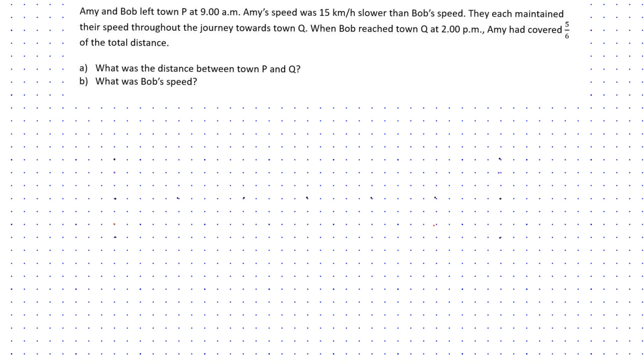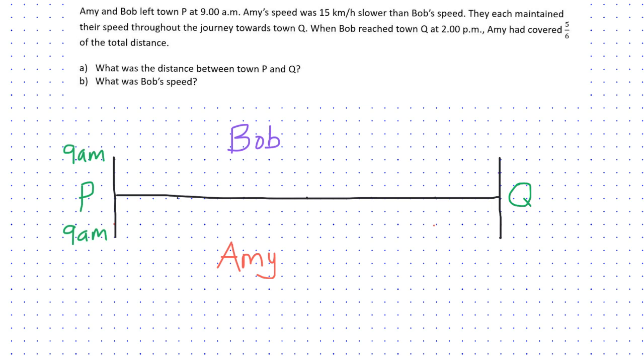So first, I'm going to draw a diagram which will help us to answer the question easily. The question says that both Bob and Amy left town P at 9am. It says Bob reached town Q at 2pm. So I will draw Bob's journey in purple. So he reached town Q at 2pm, which means he took 5 hours to reach town Q.